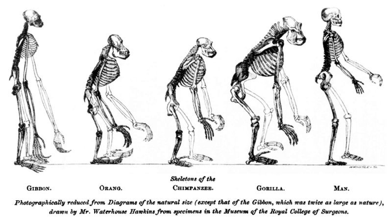Scientists are divided over the likelihood of life arising independently on Mars or on other planets in our galaxy.